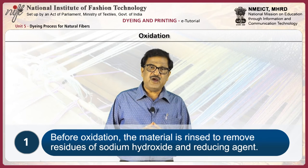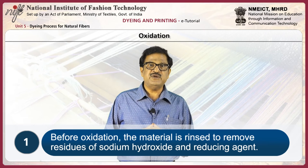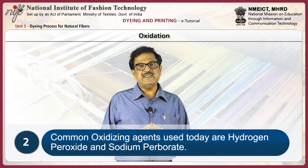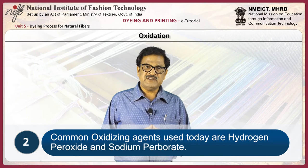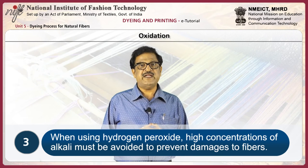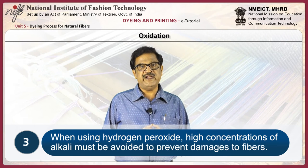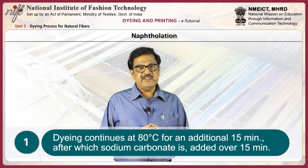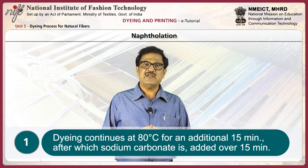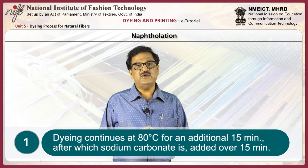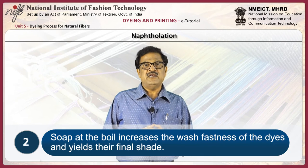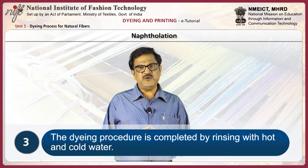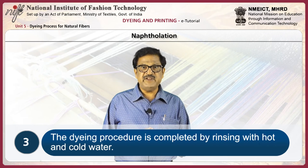Oxidation: Before oxidation, the material is rinsed to remove residues of sodium hydroxide and reducing agent. Common oxidizing agents used today are hydrogen peroxide and sodium perborate. When using hydrogen peroxide, high concentrations of alkali must be avoided to prevent damage to the material. Soaping: This step consists of treating the dyed material with soap at or near the boiling temperature for 10 to 20 minutes. Soaping at the boil increases wash fastness and yields the final shade. The dyeing procedure is completed by rinsing with hot and cold water.